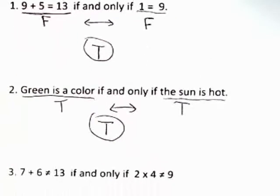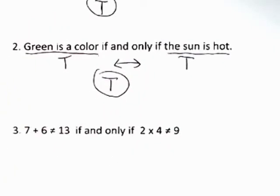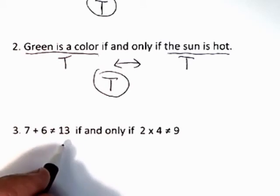And the third one: 7 plus 6 is not equal to 13 if and only if 2 times 4 is not equal to 9.